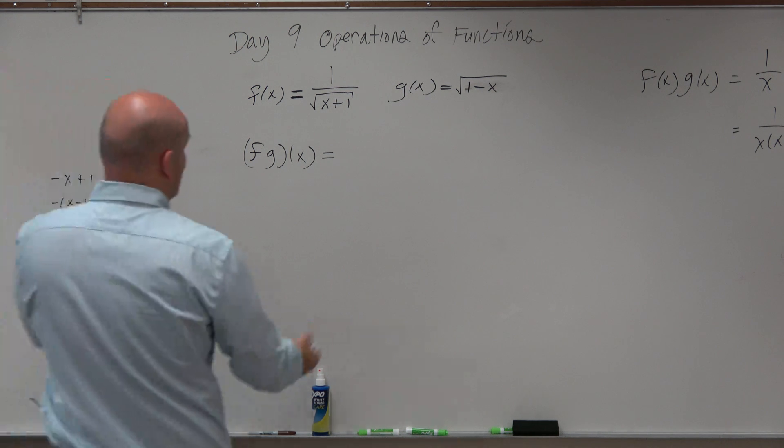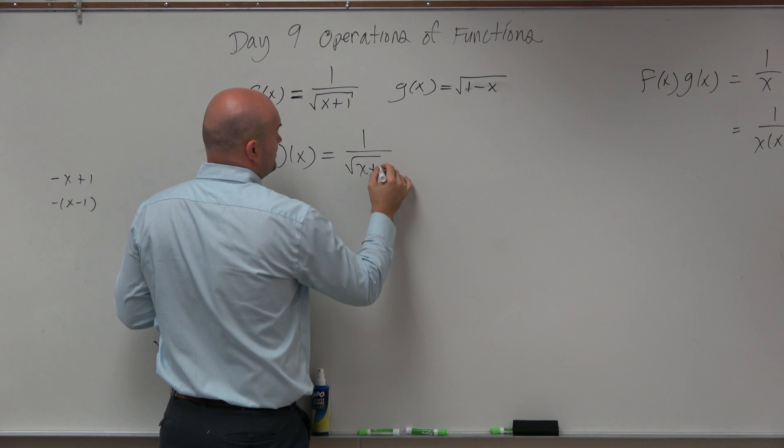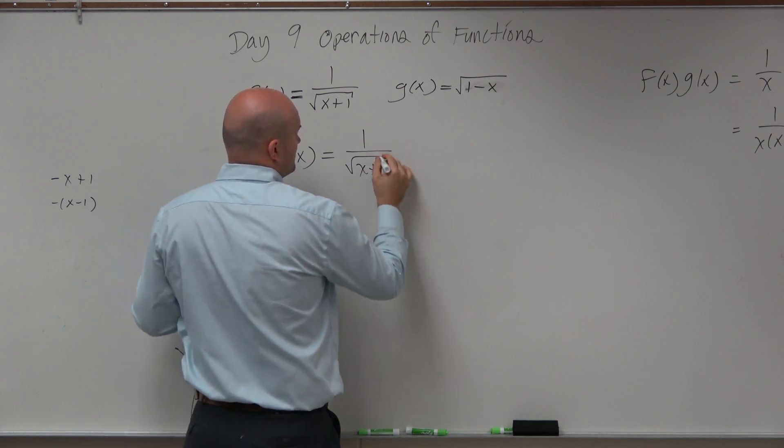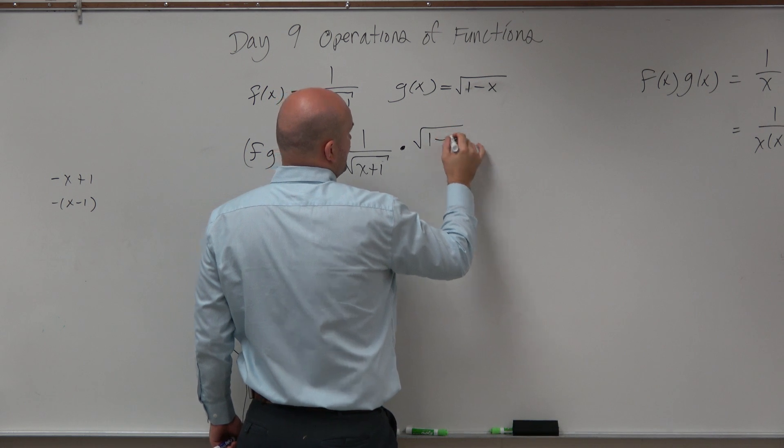All we're doing is multiplying f of x times g of x. So 1 over the square root of x plus 1, times g of x, which is the square root of 1 minus x.